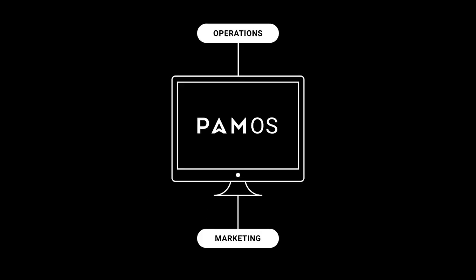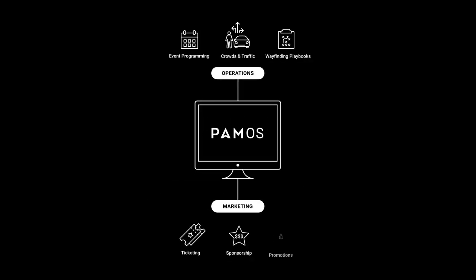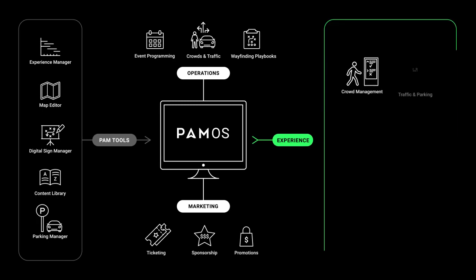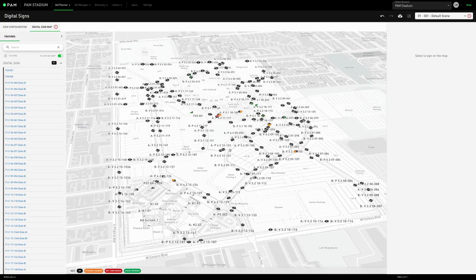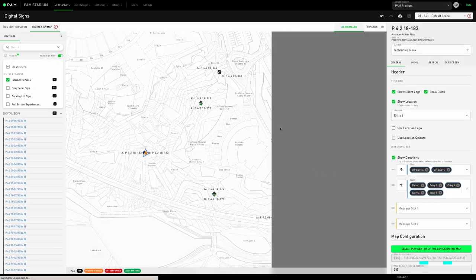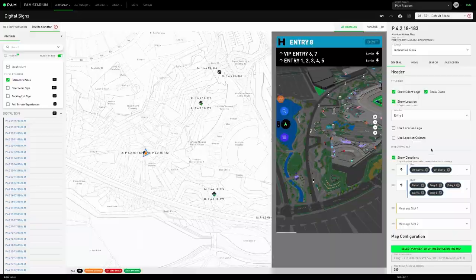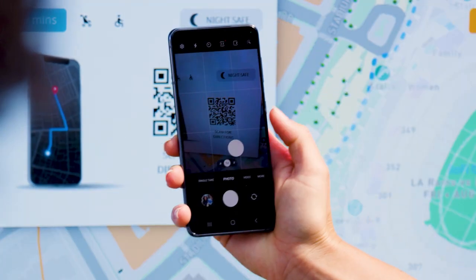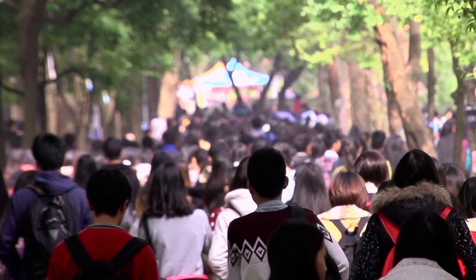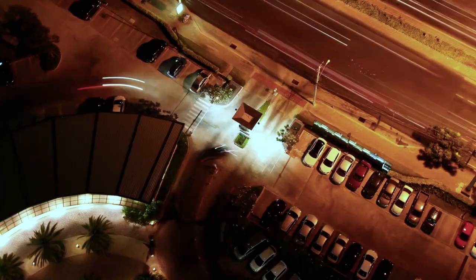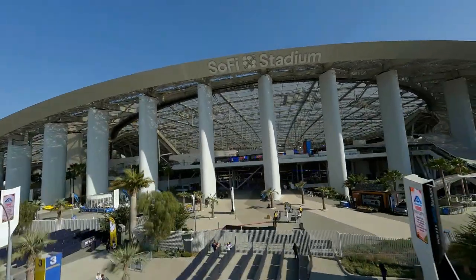It's just one part of the complete suite of smart software tools that makes PAM the world's first complete smart navigation platform — seamlessly integrating the operational, environmental, and experiential elements of navigation to make every place smarter, social, and connected, all the time.